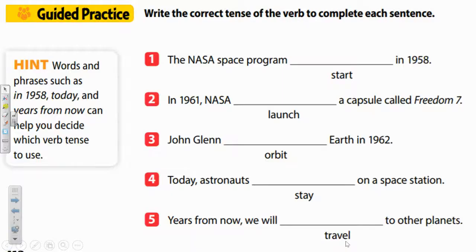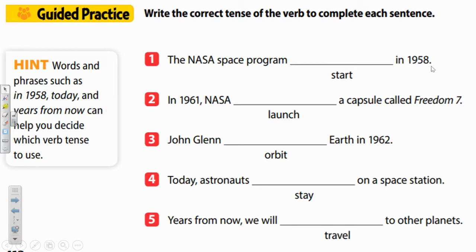Let's take a look at the guided practice below together. The directions say: write the correct tense of the verb to complete each sentence. The quick hint says: words and phrases such as in 1958, today, and years from now can help you decide which verb tense to use. Number one: the NASA space program blank in 1958. There's that key phrase — in 1958 — that should tell your brain this happened a while ago.